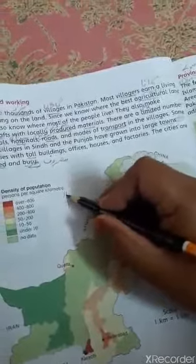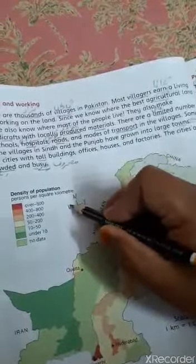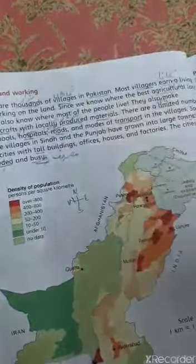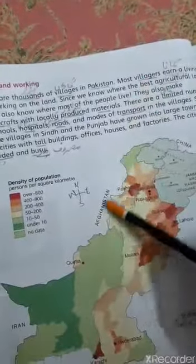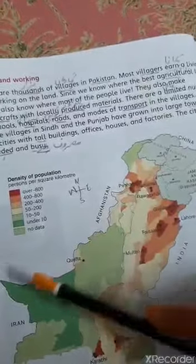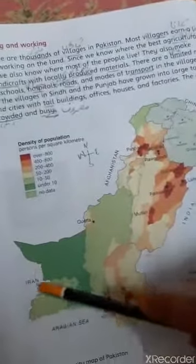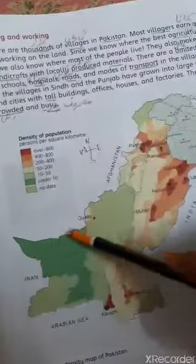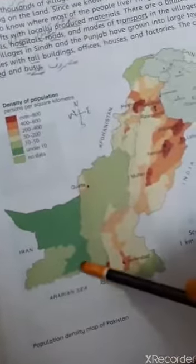Map of Pakistan. Theek hai. To hamare paas jo direction hai, to hamare paas 4 directions hain — North, South, East and West. Theek hai. To is mein jo hamare paas North West mein hai to yeh hamare paas hai Afghanistan. Theek hai. West mein hai hamare paas Iran. Theek hai. This one is Iran. Jo borders hain with Pakistan, in the South is Arabian Sea.